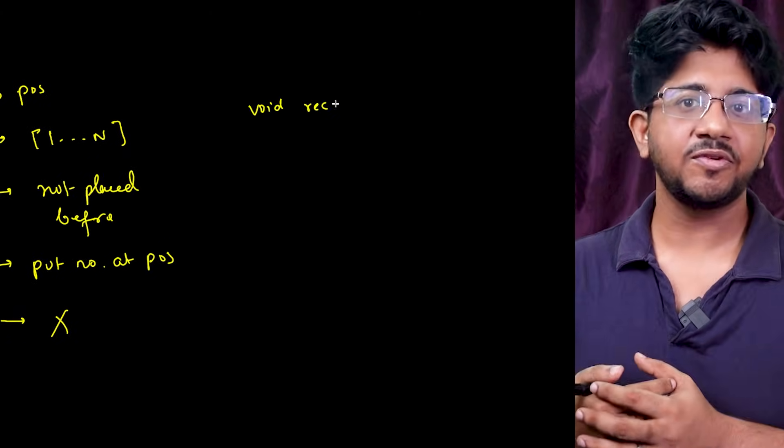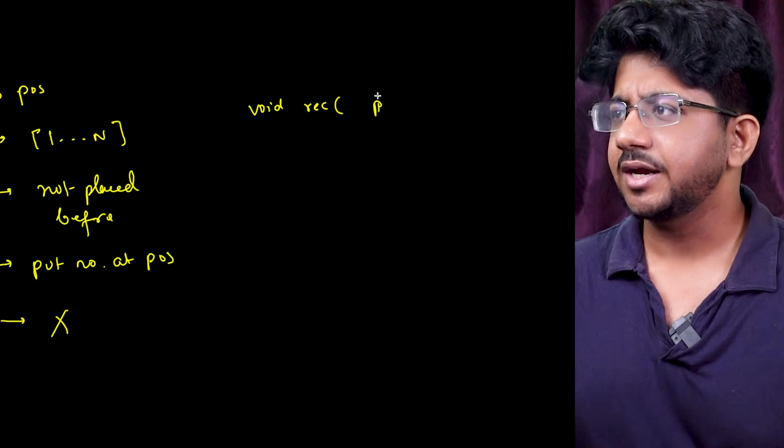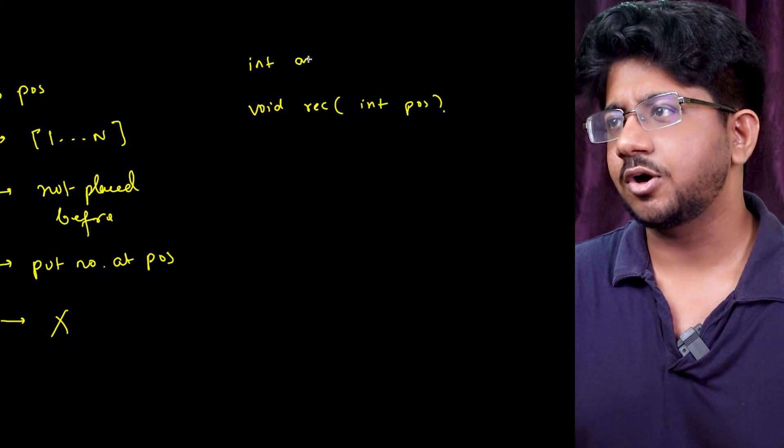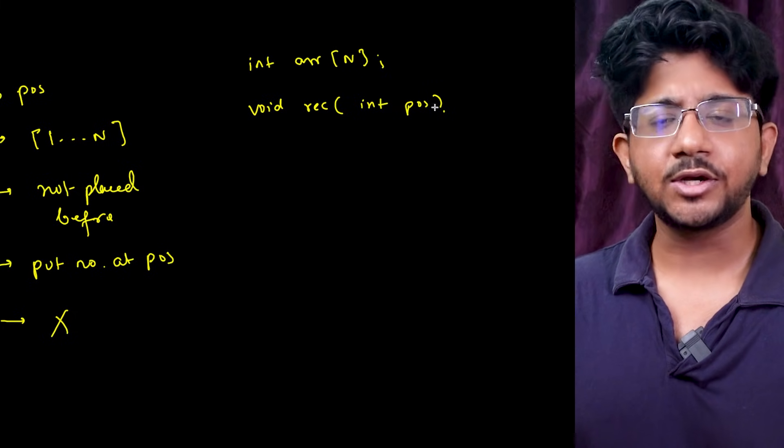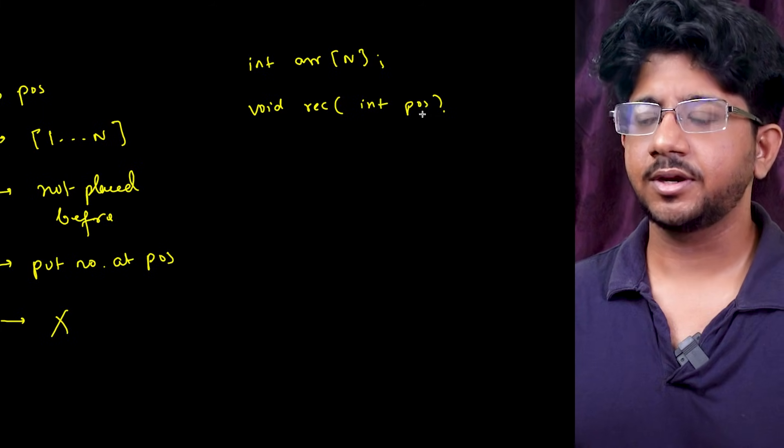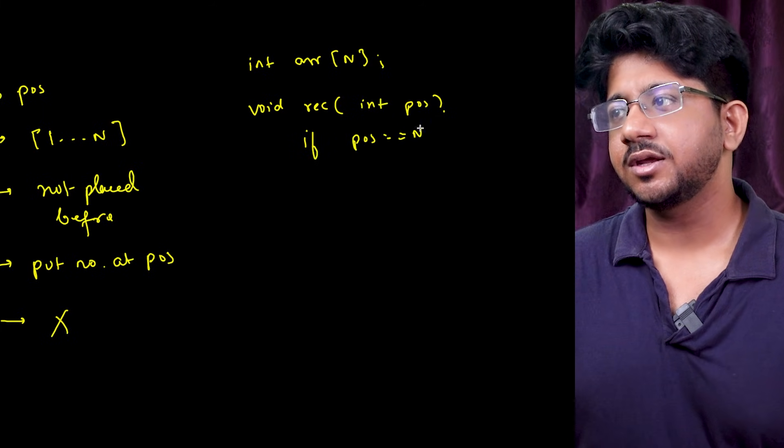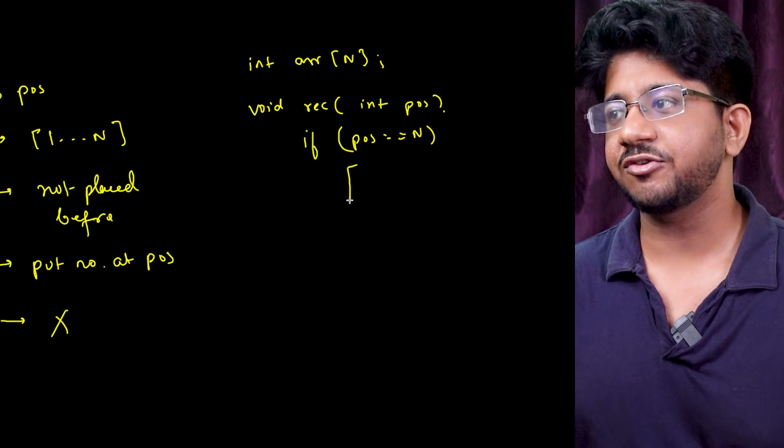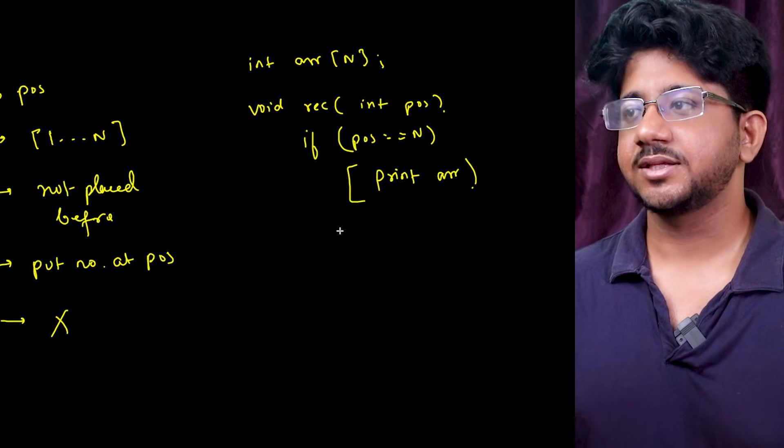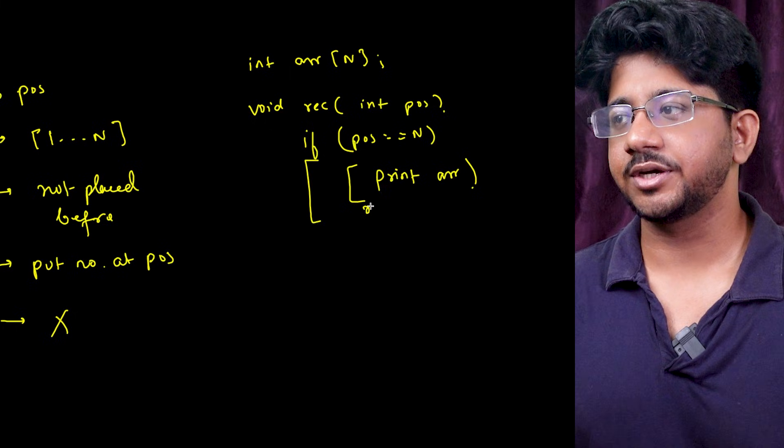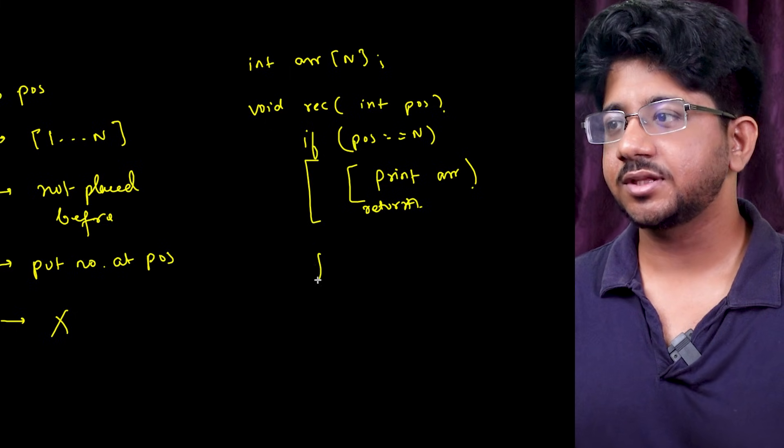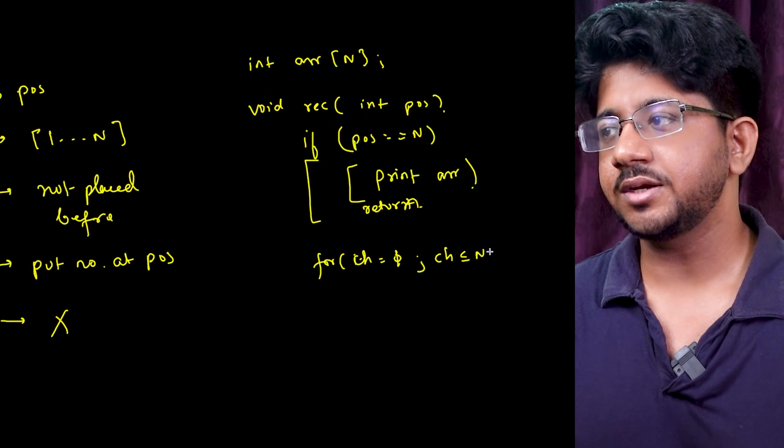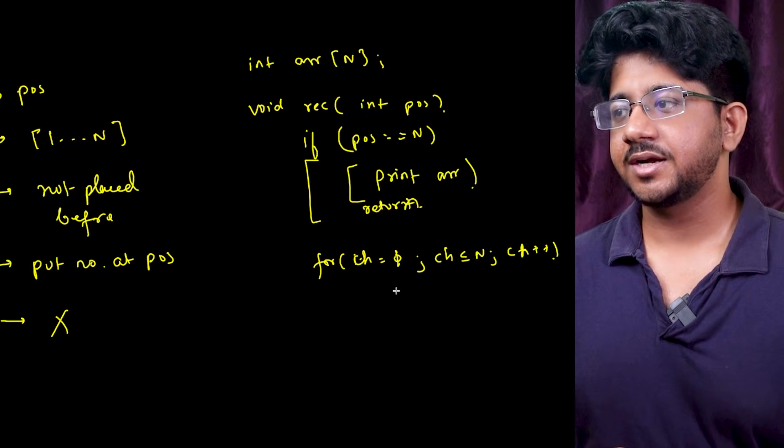Once you write this the code of this looks very very simple. Same void. The code will also be very very simple. Void recurrence int which position you are trying to fill. There is a simple array let's say which is of n size right outside and you are trying to fill the position pause right. Base case if position equal to equal to n you are done with placing all the things. So you will get a valid you can print ARR somehow right. This is the base case and you of course return from the base case.